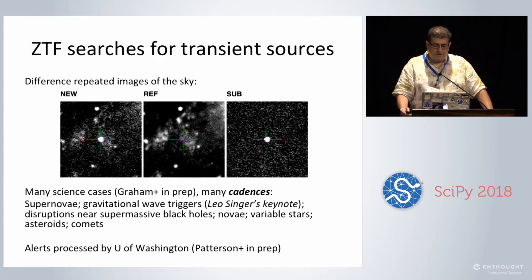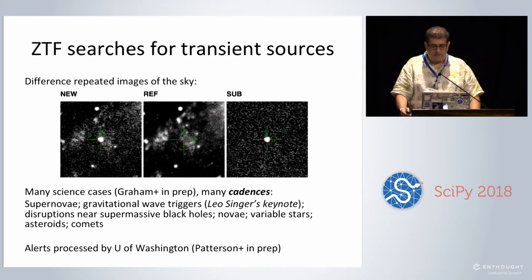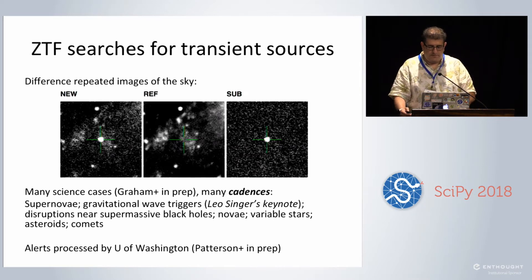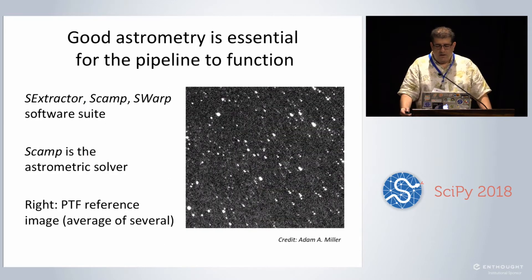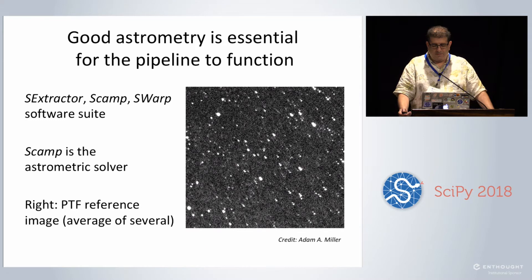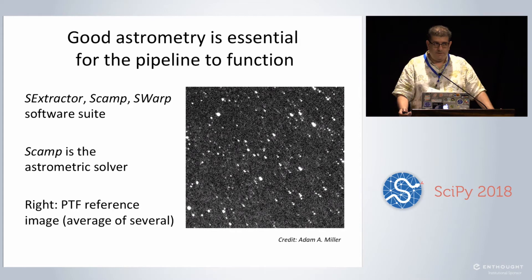We're exercising the LSST alert mechanism — those are all processed by the University of Washington, work led by Maria Patterson. But I'm not going to talk about the alerts today. I'm going to talk about what was a hard problem for us to solve: getting good astrometry for the pipeline to function.